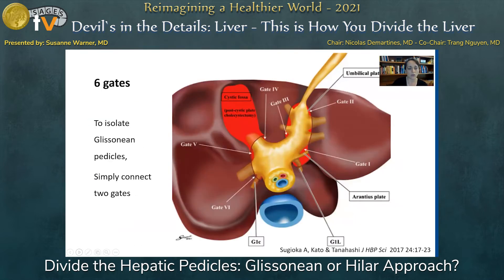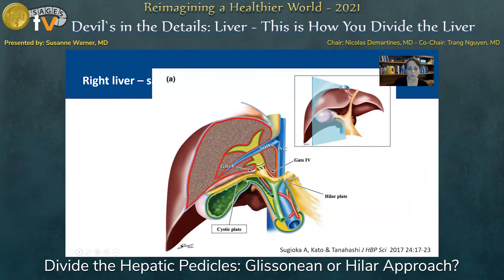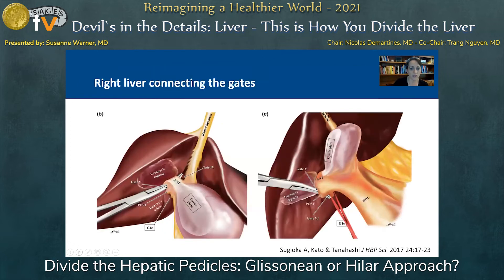To isolate the Glissonian pedicles using the six gates, we can simply connect two gates. This is a caudal view of the same thing shown previously — landmarks in boxes and gates with arrows. On the left side of the liver, connecting gate one and gate two isolates the left-side pedicle. You can also connect gate three and gate one without entering the hepatoduodenal ligament. For the right liver in sagittal view, connecting gate five to gate four isolates the anterior pedicle above the cystic plate, while connecting gate five to gate six isolates the posterior pedicle, which can be accessed through Rouvière's sulcus.